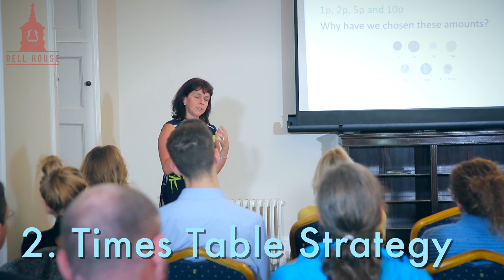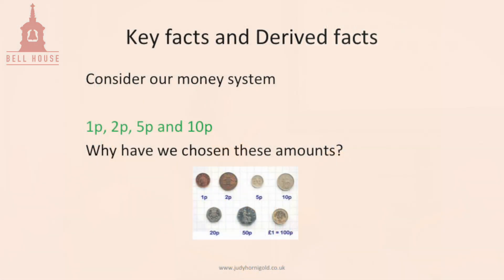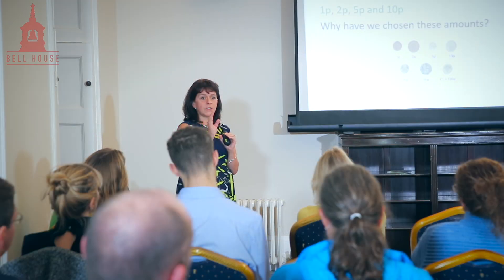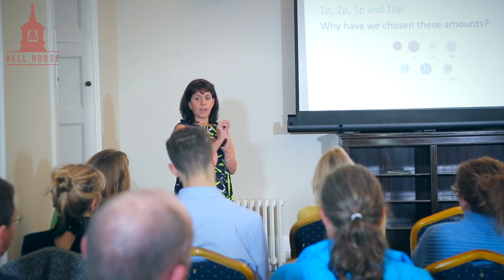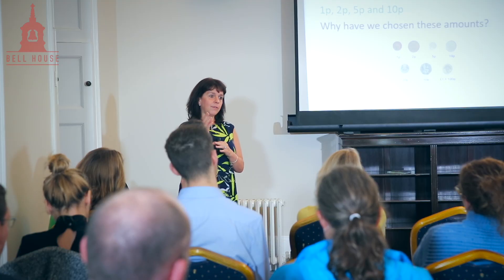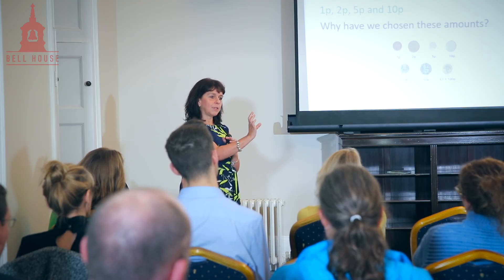In terms of times tables, this idea of key facts can really help. I introduce it by looking at our money system — I ask children: why do we have a 1p, 2p, 5p, and 10p? Why don't we have a 3p? We don't need it — we can make it from the others. If you apply that to multiplication tables, surely we only need to know the 1 times, 2 times, 5 times, and 10 times, because we can work everything else out from those.